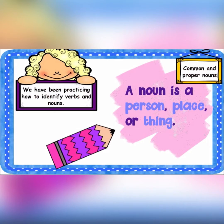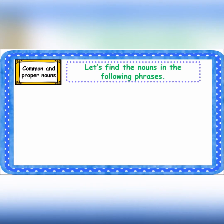What is a noun? A noun is a naming word — it's simply a naming word. But to expand it, a noun is the name of a person, animal, place, or thing. So a noun is simply a naming word. Now let's find the nouns in the following phrases.